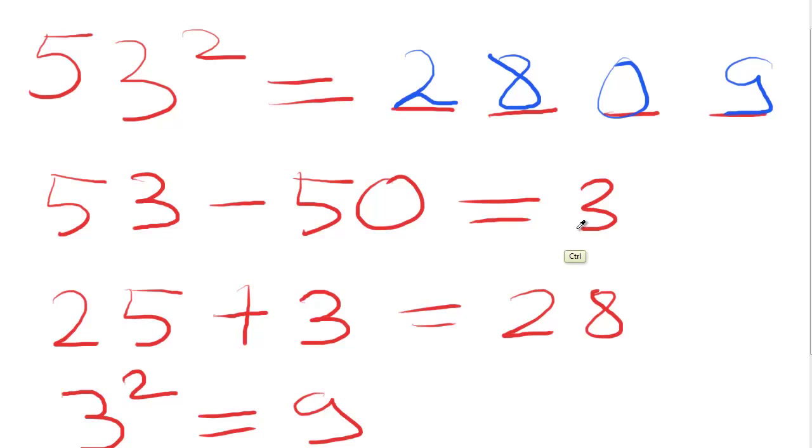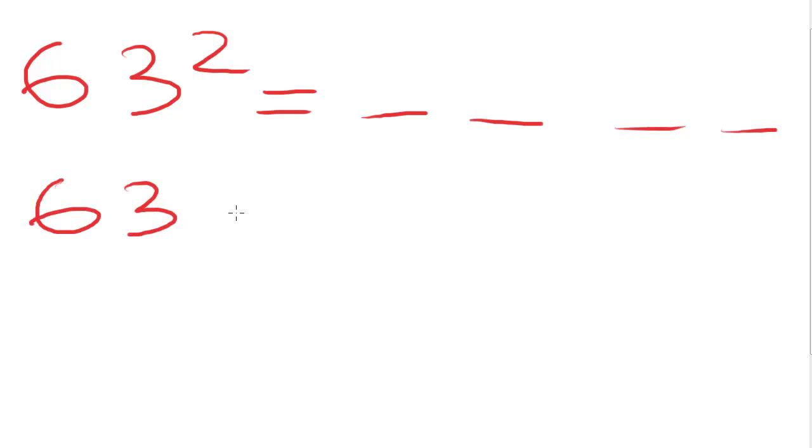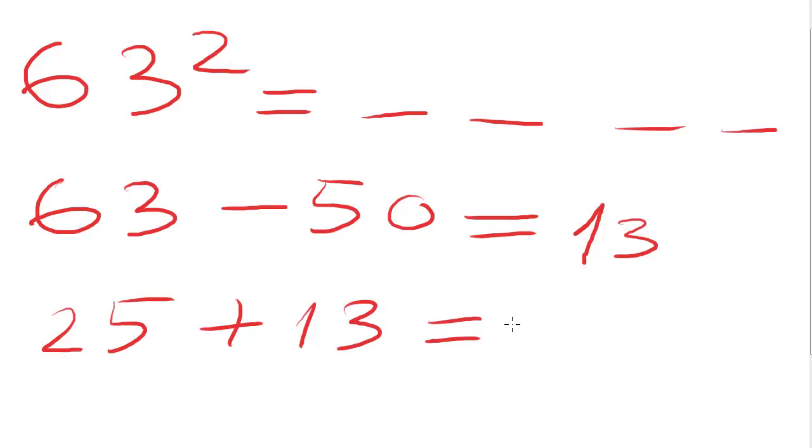Now, let's take another example. Let's calculate the square root of 63. Again, calculate 4 digits. Make the difference between 63 and 50. The difference is 13. Now, make the addition between 25 and 13. The addition is 38. These are the first two digits.